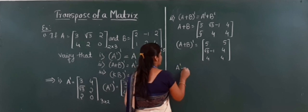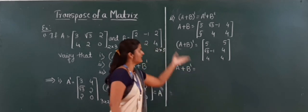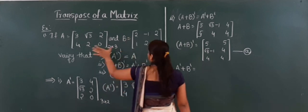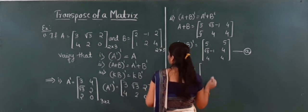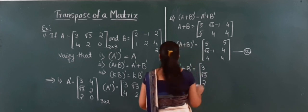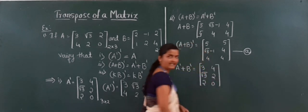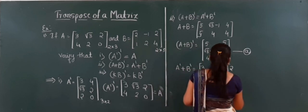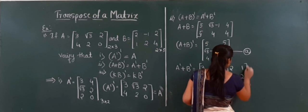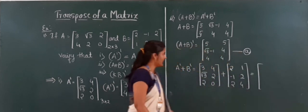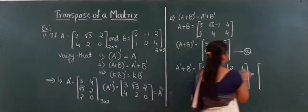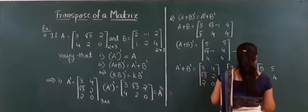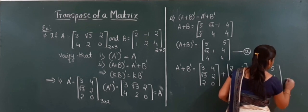Next, I compute A dash plus B dash separately. For A dash, rows of A become columns: 3, root 3, 2 and 4, 2, 0. For B dash, rows of B become columns: 2, minus 1, 2 and 1, 2, 4. Adding corresponding elements: 3 + 2 = 5, 4 + 1 = 5, root 3 minus 1, 2 + 2 = 4, 2 + 2 = 4, 0 + 4 = 4.